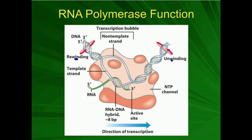RNA polymerase exists in the nucleus because that's where the DNA is. So if we want to transcribe the DNA into RNA, we're going to have to have these enzymes in the nucleus, where the DNA is.